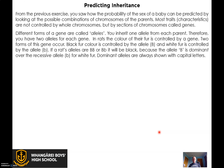We looked at the probability. Now we're going to move on to inheriting other things other than gender. Each cell in our body has got 46 chromosomes and 23 pairs, and we've got one of each. On those chromosomes are little chunks of information called genes, and we get one gene from mum and one gene from dad. Two copies of a gene are called an allele.